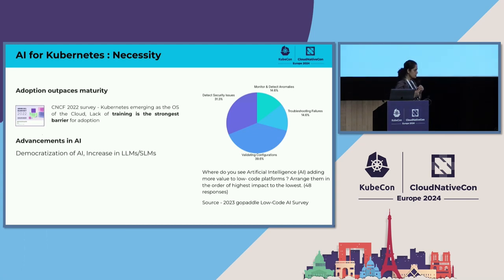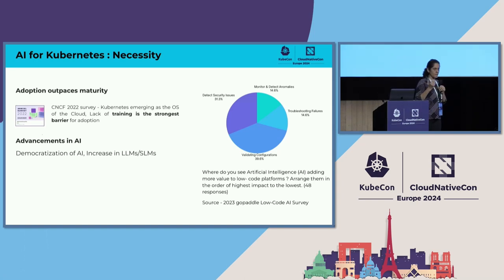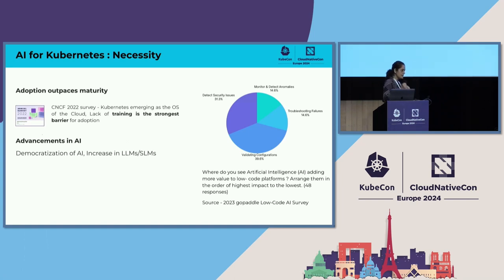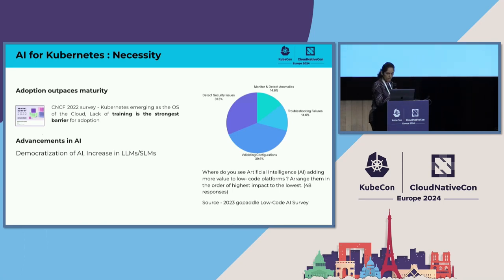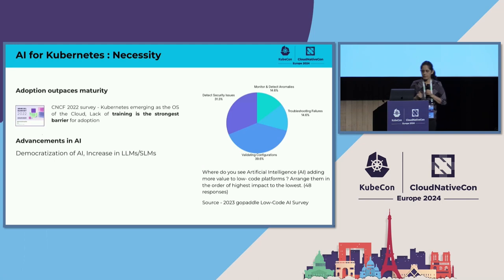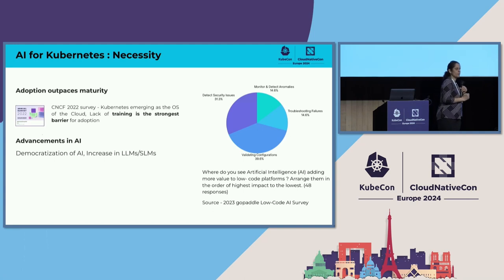So it's a great opportunity for us to put these two things together and find the value immediately. We did a short survey last year across the globe. A lot of platform engineering folks and DevOps engineers participated in this. We got about 48 responses to see where AI can contribute in solving Kubernetes issues. We can clearly identify validating configurations, troubleshooting failures, monitoring and detecting anomalies, and detecting security issues as four main areas where AI can add value. But then what is preventing us from doing that? How many of you are really evaluating AI in your operations?